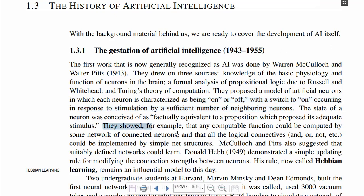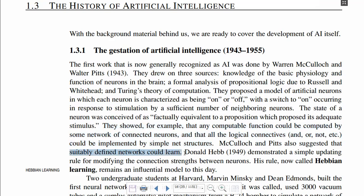They proposed a model of artificial neuron in 1943, and their finding was that a network of connected artificial neurons can compute any function that could be computed by the actual neurons. Secondly, logical operations can also be implemented by simple network structures. They also suggested that artificial neurons can learn, but they did not implement or demonstrate how these networks can learn.